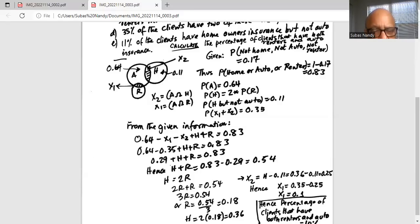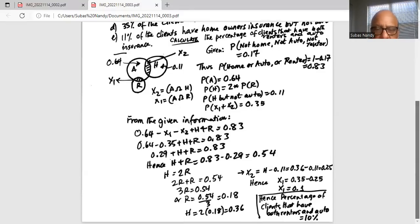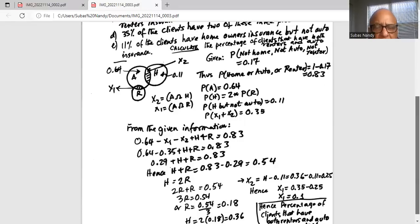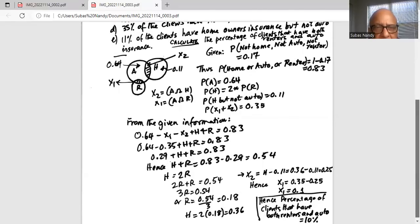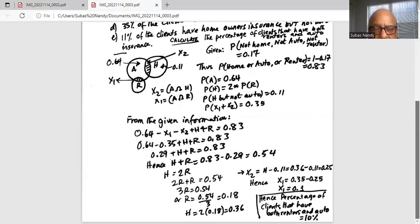X2 portion equals homeowners minus 0.11. Because it is given 0.11 is the clients with homeowners insurance but not auto insurance. So X2 equals homeowners minus 0.11. Now we have solved for homeowners is 0.36. So X2 is 0.36 minus 0.11, which is 0.25.